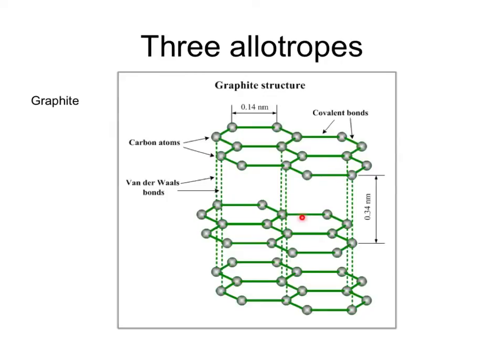Graphite also has a giant structure, but in graphite each of the carbon atoms is only joined to three other carbon atoms and the structure is in layers — many of these hexagonal tessellations, like chicken wire — these flat layers separated from each other by weak bonds.